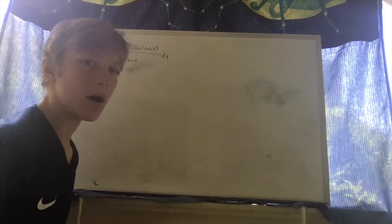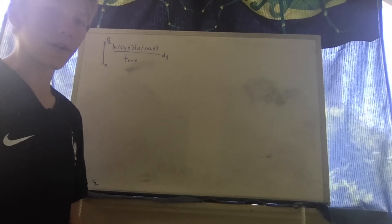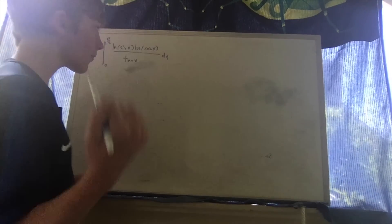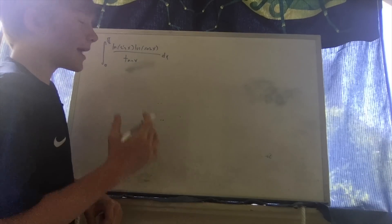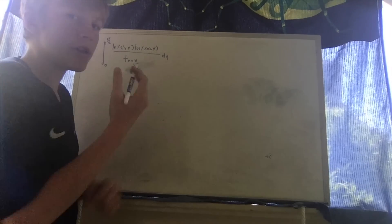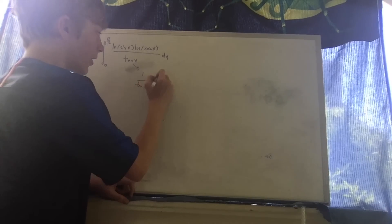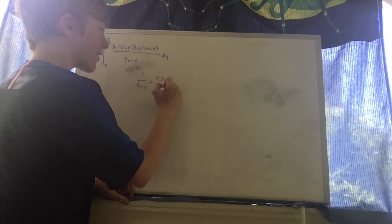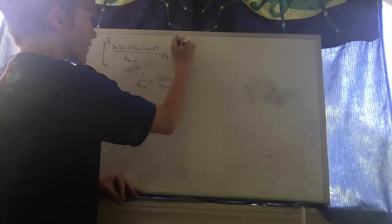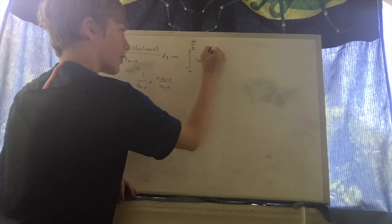Good morning mathematicians. Today I'm going to be integrating from 0 to π/2 of natural log of sin(x) times natural log of cos(x) over tan(x). Seeing all these trig functions, we'd like to make a substitution to simplify things. We'll rewrite 1/tan(x) as cos(x)/sin(x), since tan(x) = sin(x)/cos(x). So this becomes the integral from 0 to π/2 of cos(x) times...